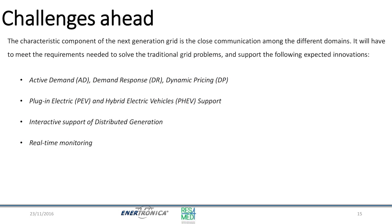What are the characteristics of the next generation grid? Active demand, demand response, dynamic pricing, and the issue of plug-in electrical and hybrid vehicles. Interactive support of the grid is also key — the new challenge is not just grid-to-vehicle charging, but also vehicle-to-grid. The idea is: if we have a lot of batteries connected to the grid during the night, why not use those systems to bring back energy to the grid?